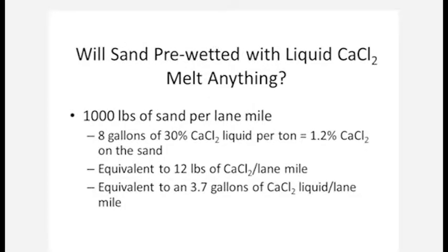Now, let's assume a fairly typical sanding rate of about a thousand pounds of sand per lane mile, and let's assume we treat that sand with 8 gallons of a 30% calcium chloride liquid per ton.